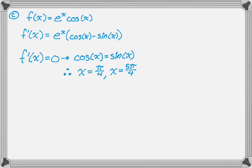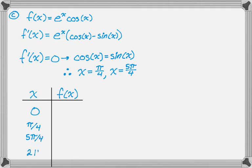Okay, so now I'm just going to evaluate the function at the critical points and the endpoints. So the endpoints are 0 and 2 pi, and the critical points we found are pi over 4 and 5 pi over 4. So we need to plug in.